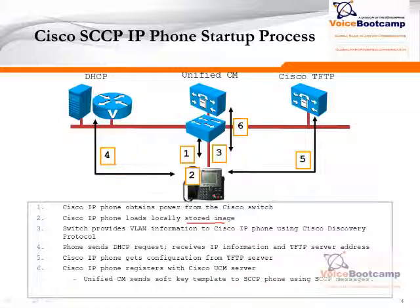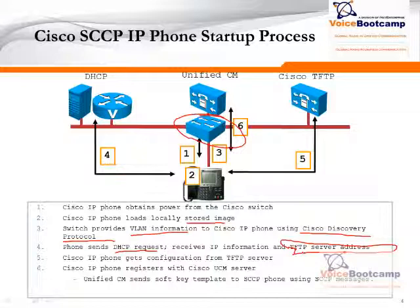Once the local image is loaded, the phone will then obtain VLAN information from the switch using CDP — Cisco Discovery Protocol. It is very important for Cisco phones to ensure the switch has CDP enabled. The phone will then send a DHCP request, just like any normal PC, and receive IP information along with the TFTP server address. The TFTP server tells the phone where to go and download the configuration file — it does not tell the phone where to register.